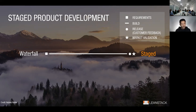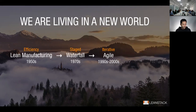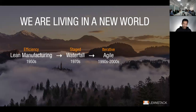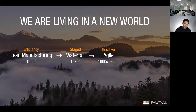Waterfall eventually began to break down as customer needs outpaced its cycle time. When we got into the early 90s and 2000s, PC computing was on the rise and the internet came into play. With those technologies, it became impossible to deliver what customers wanted — needs would change mid-cycle — so change management became the name of the game, and that's what Agile was all about.